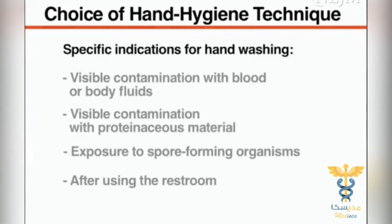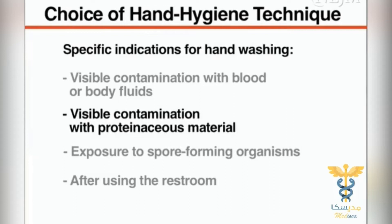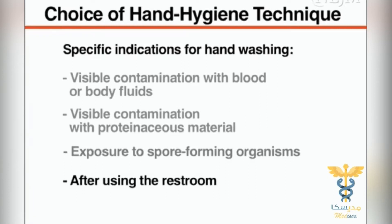There are specific indications for which hand washing should be performed instead of hand rubbing. Hand washing must be conducted when the hands are visibly contaminated with blood, body fluids, or proteinaceous material. Hand washing must also be performed after exposure to spore-forming organisms — for example, after caring for patients with diarrhea associated with Clostridium difficile or after exposure to Bacillus anthracis — and after using the restroom.